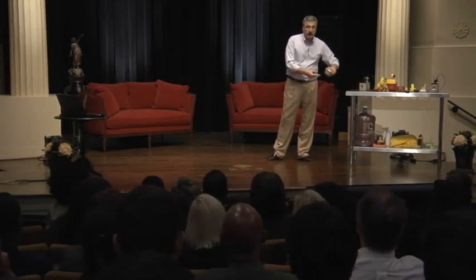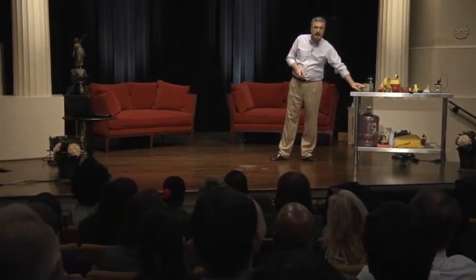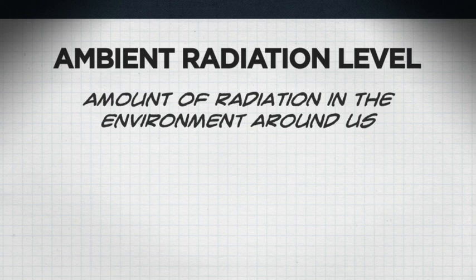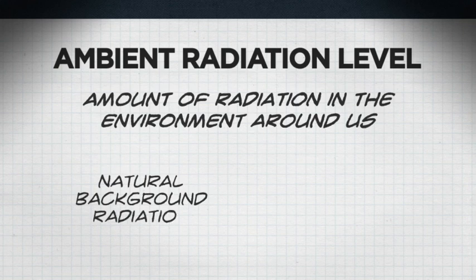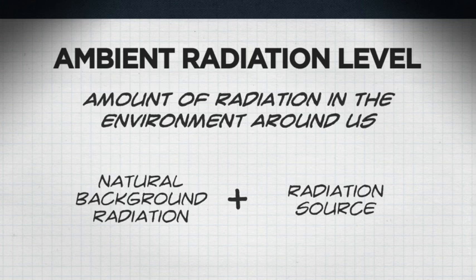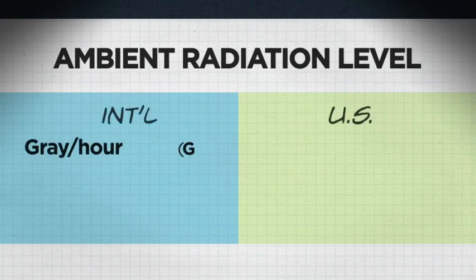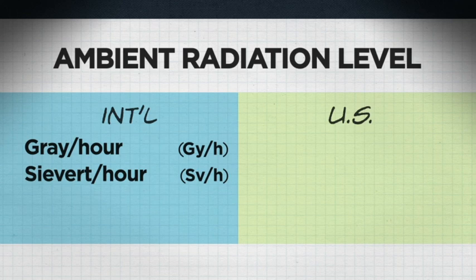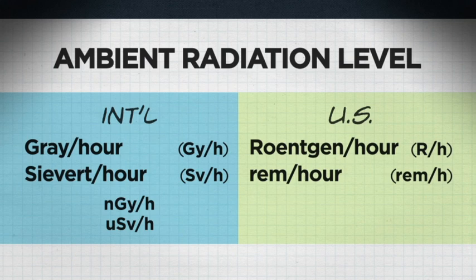Now we look at ambient radiation levels — if we have radioactivity in a source, what are the radiation levels in the surrounding area? We need to account for natural background plus whatever comes from the source. The international units are gray per hour or sieverts per hour, though it's more common to see nanogray per hour or microsieverts per hour. In the U.S., we use roentgen or rem per hour, more commonly millirem per hour or micro-roentgen per hour.